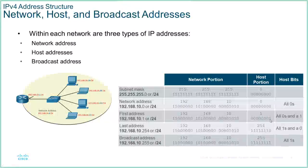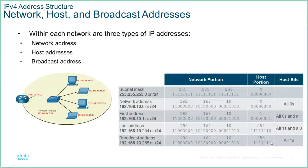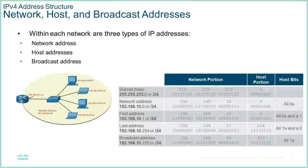The first host is one more than the network address; the last host address is one less than the broadcast — so all ones except for the last bit which is a zero. For the first host, all zeros except for the last bit which is a one. If you remember that basic concept, you will always be able to work out the valid host range for any network.